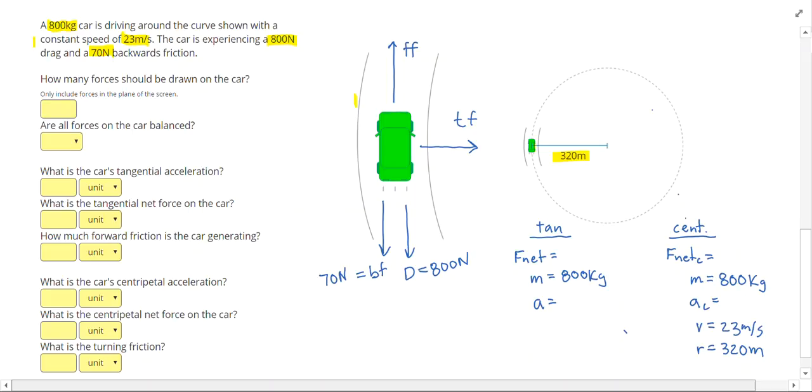Let me also highlight a key word, constant speed. Since the speed is constant, that means my tangential acceleration, which has to do with the changing speed, is zero. Since the speed is constant, my tangential acceleration is zero and my tangential net force is also zero. Or in other words, the forces in front and behind the object. So for tangential, we're looking at these forces here. And this tells me that these forces have to balance. So my forward friction is going to be 870 newtons.